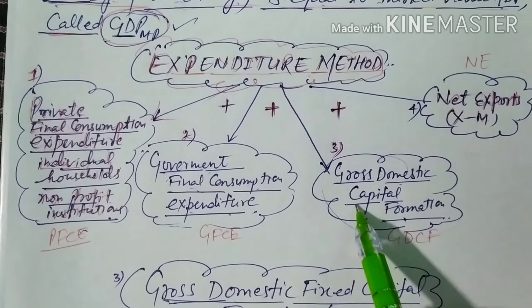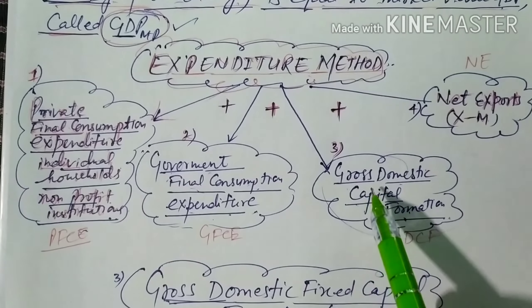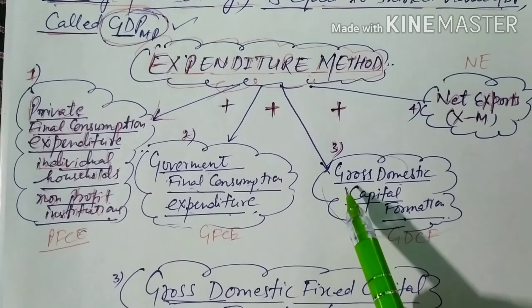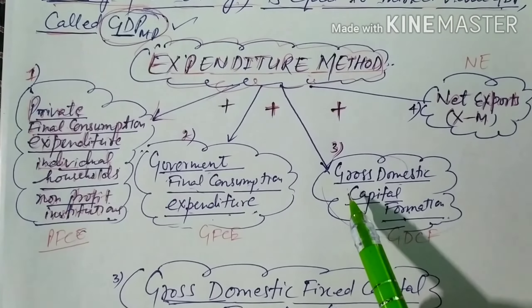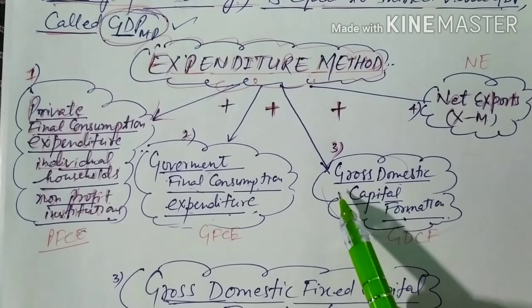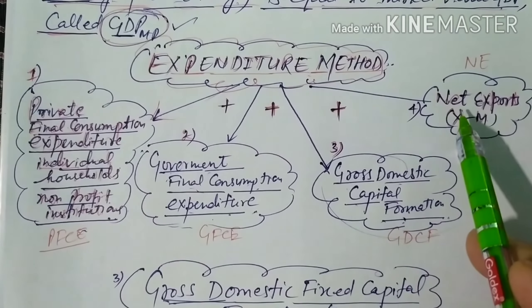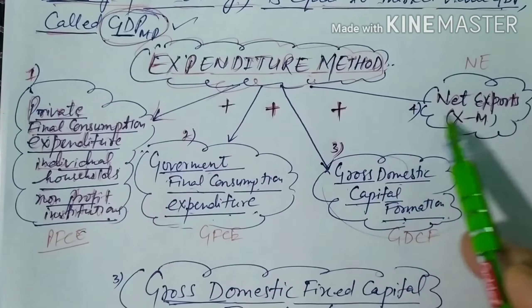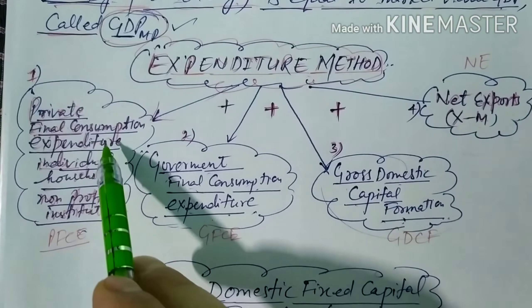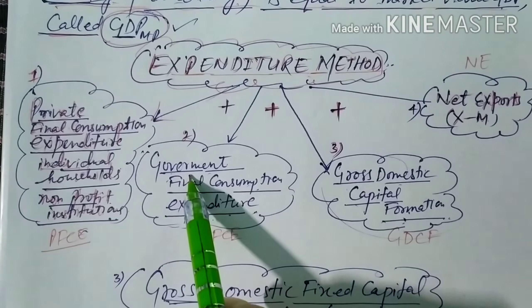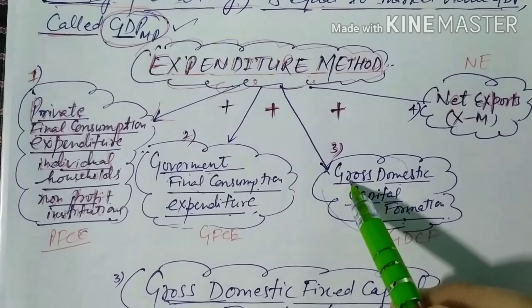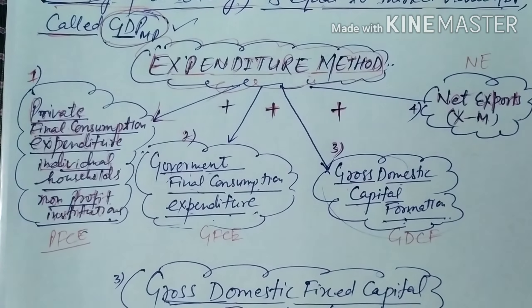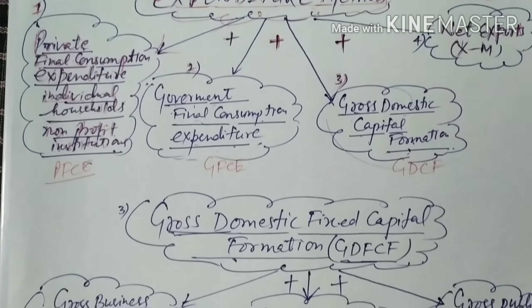The third component is gross domestic capital formation (GDCF) — the expenditure made on investment, such as on machines. The fourth component is net exports — exports minus imports. Adding private final consumption expenditure + government final consumption expenditure + GDCF + net exports gives us GDPMP — gross domestic product at market price.